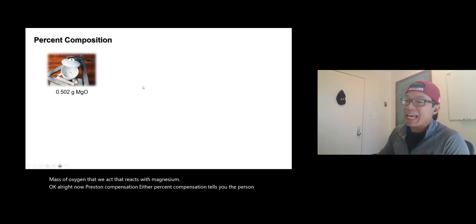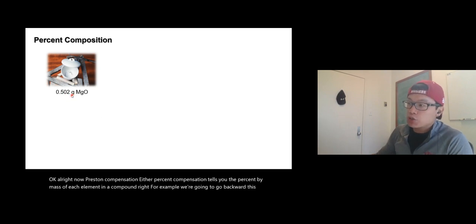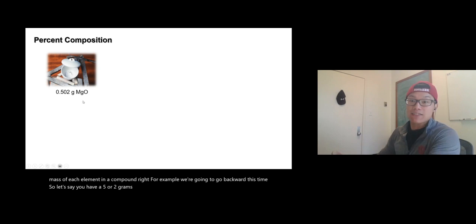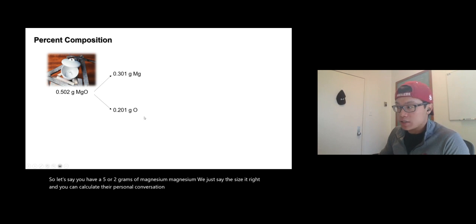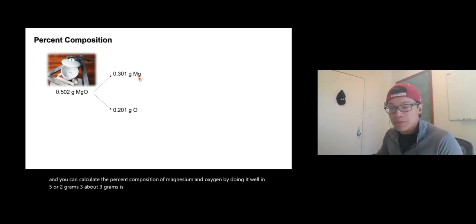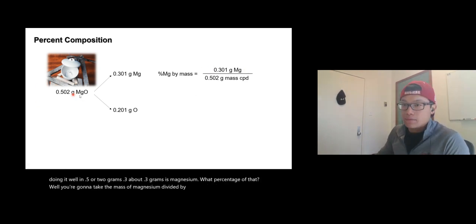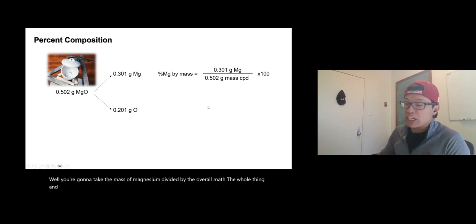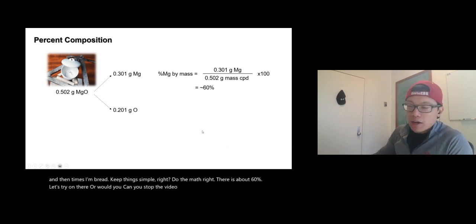Now, percent composition tells you the percent by mass of each element in a compound. For example, if you have 0.502 grams of magnesium oxide, about 0.3 grams is magnesium. The percentage is mass of magnesium divided by the overall mass, times 100 — that's about 60 percent.